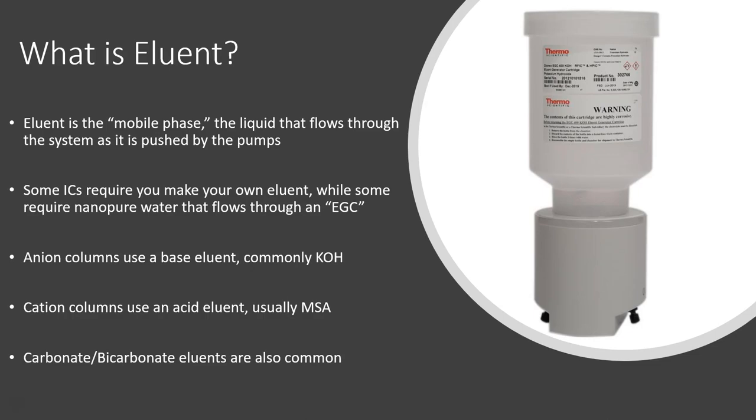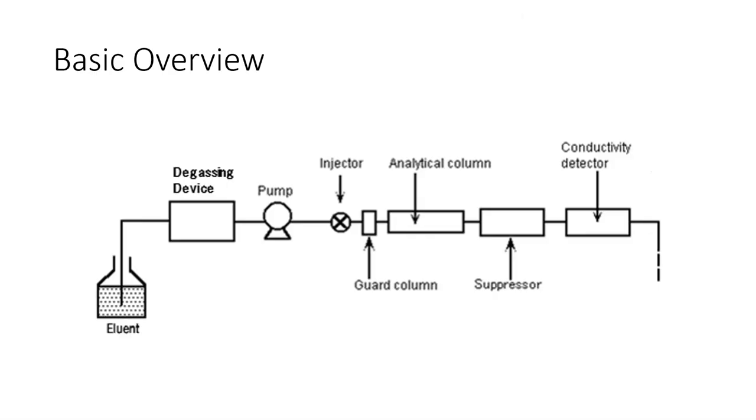So back to this image, we see that our eluent is pushed through the system by the pumps. It goes through a degassing device which removes gas because we don't want any air bubbles getting into our system. And then it makes its way to the columns, but somewhere in here we need to get our sample into the column.